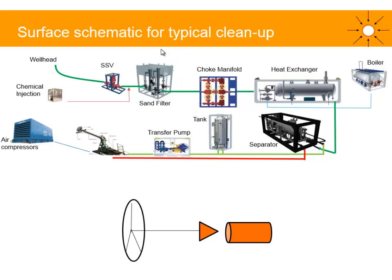Upstream of the choke manifold we have the high pressure equipment, referred to as the HP area. Downstream of the choke manifold we have the low pressure equipment, or LP. The first piece of equipment downstream of the choke is generally the heat exchanger, which is connected to a boiler to increase the temperature of the fluid. This helps with flow assurance — increasing temperature can prevent the formation of hydrates or wax further down the line, and also reduces viscosity, which helps achieve better separation and better burning.